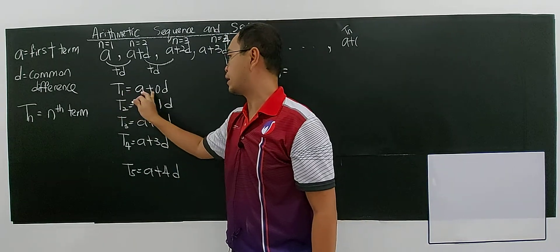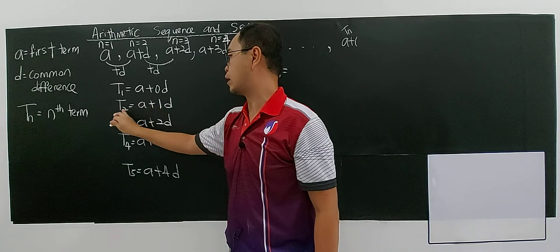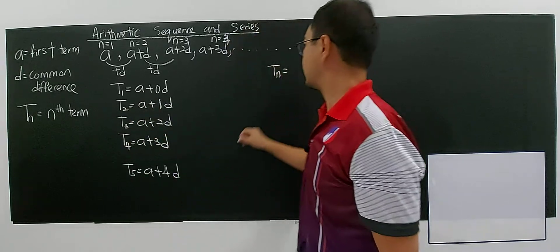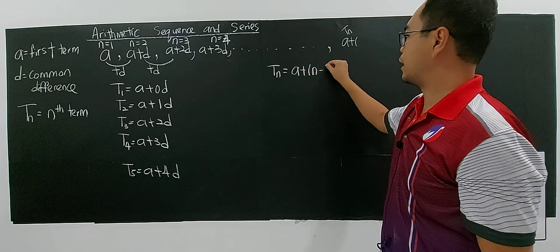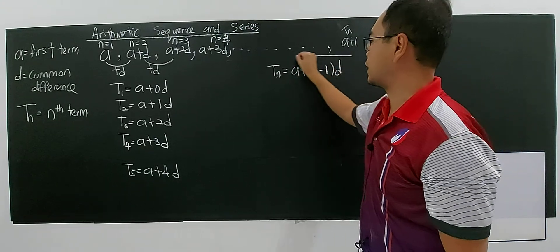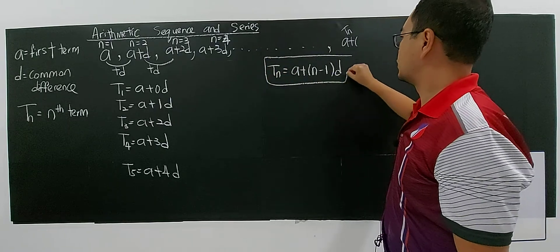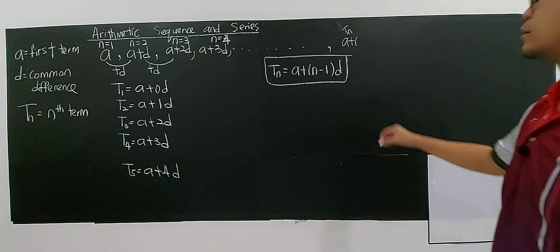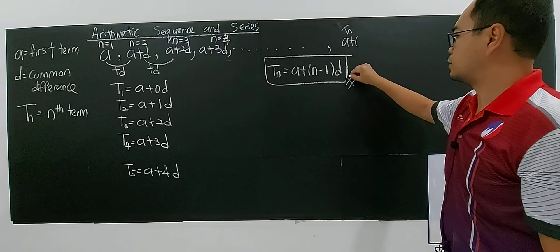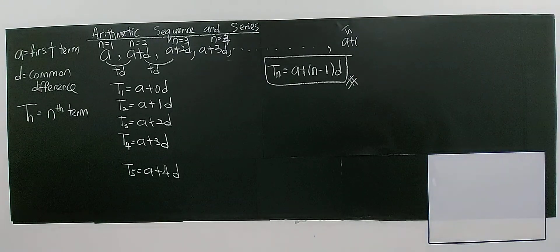Because 1 minus 1, you have 0. 2 minus 1, you have 1. 3 minus 1, you have 2. So I can say that for the nth term, I can say A plus (N minus 1)D. So this is the pattern. I get this as the nth term, the formula for the nth term.